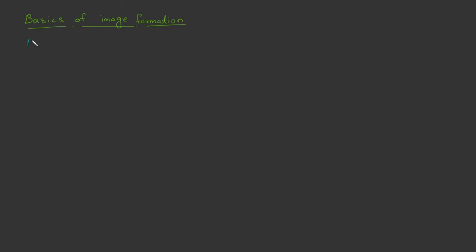First, we are going to revise how we see an object. We see an object by seeing the reflected light from that object if it is an opaque object. The reflected light from that object travels to your eyes, and your sight must be along a line in the direction of the reflected light. This direction of our sight in a specific direction is referred to as the line of sight.